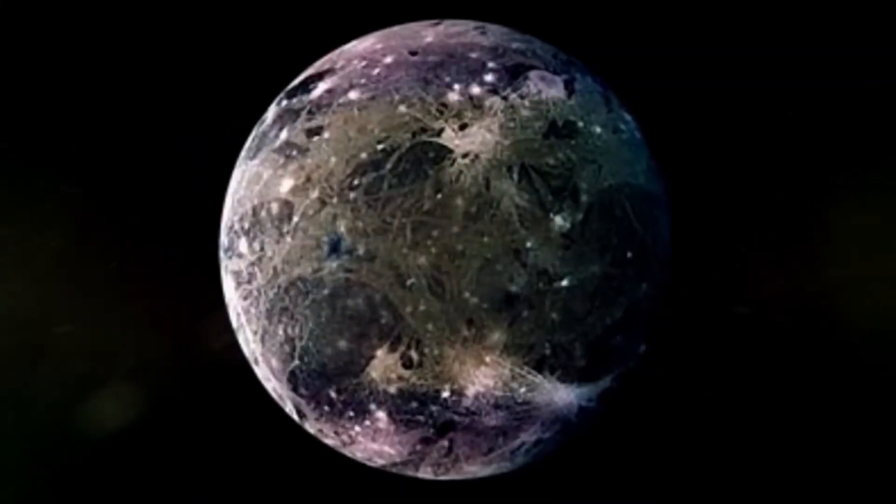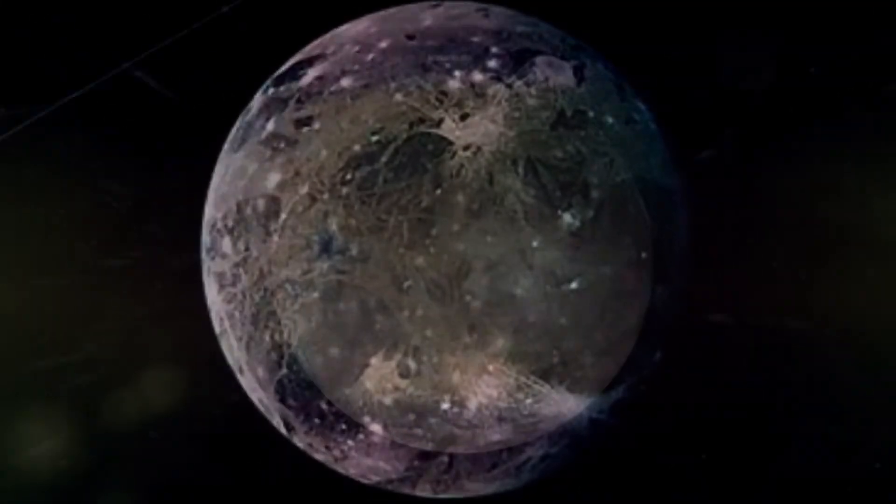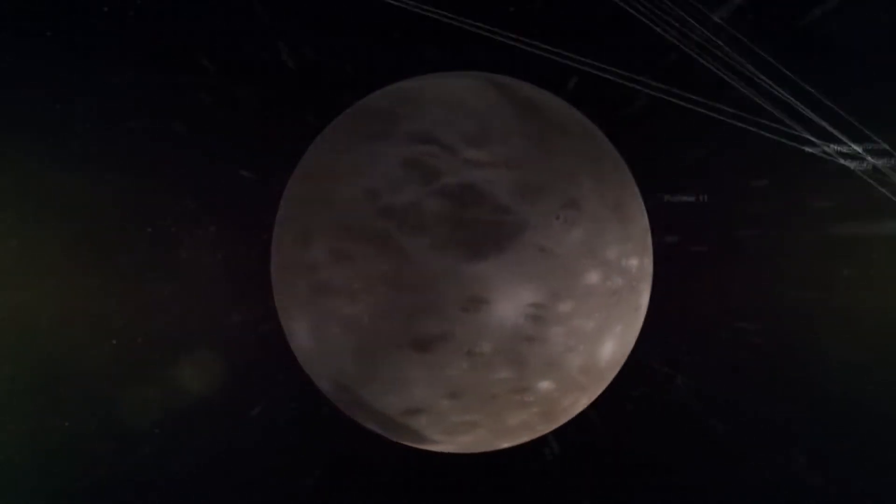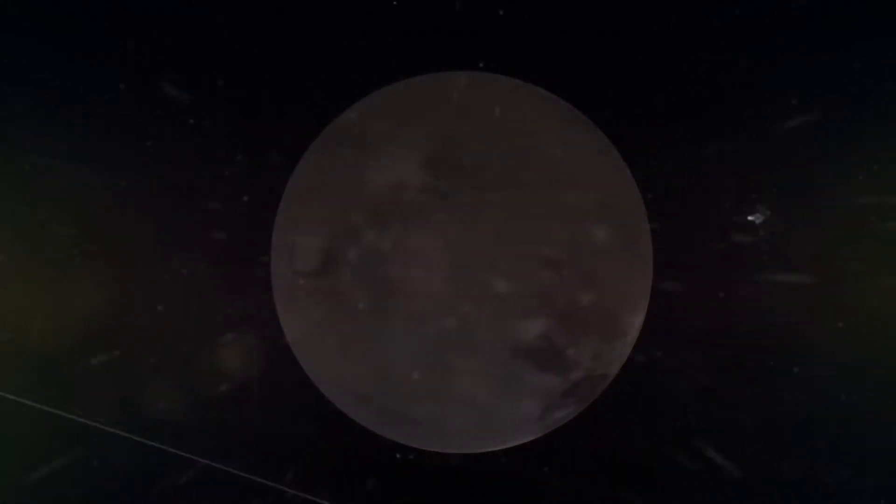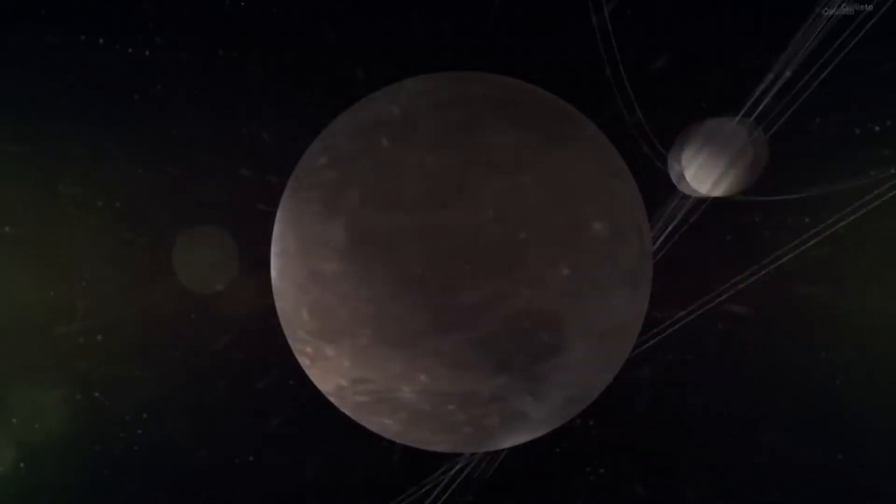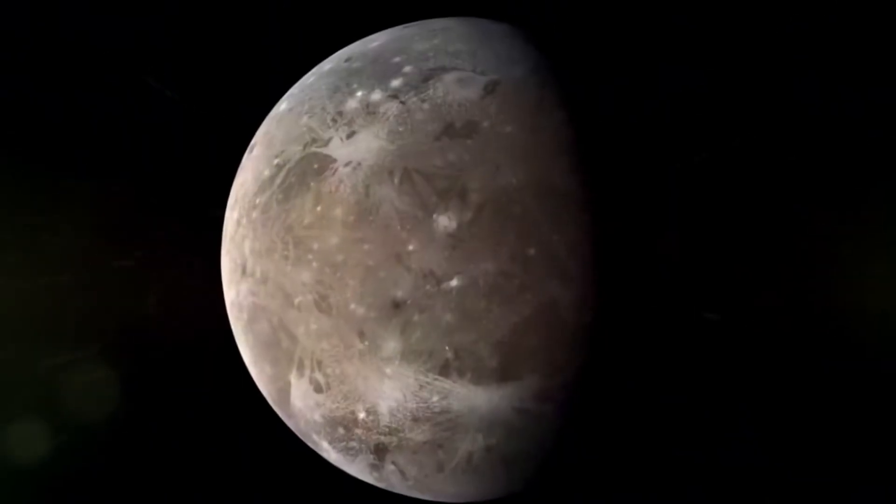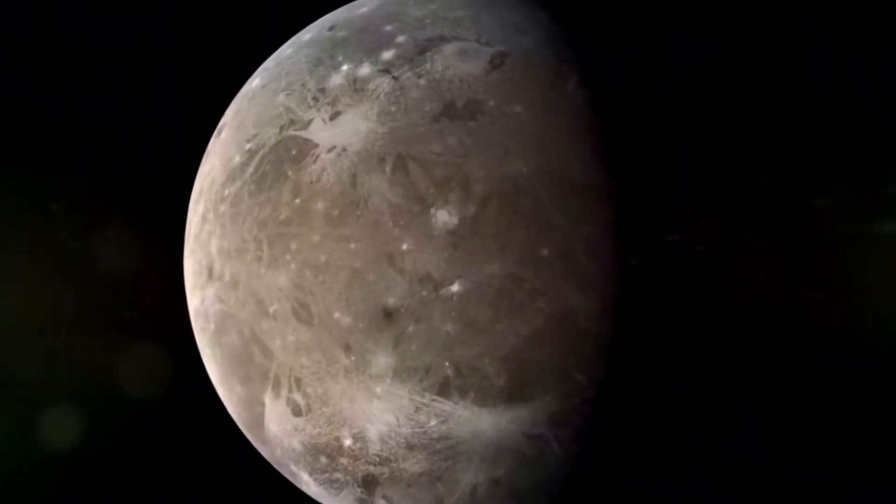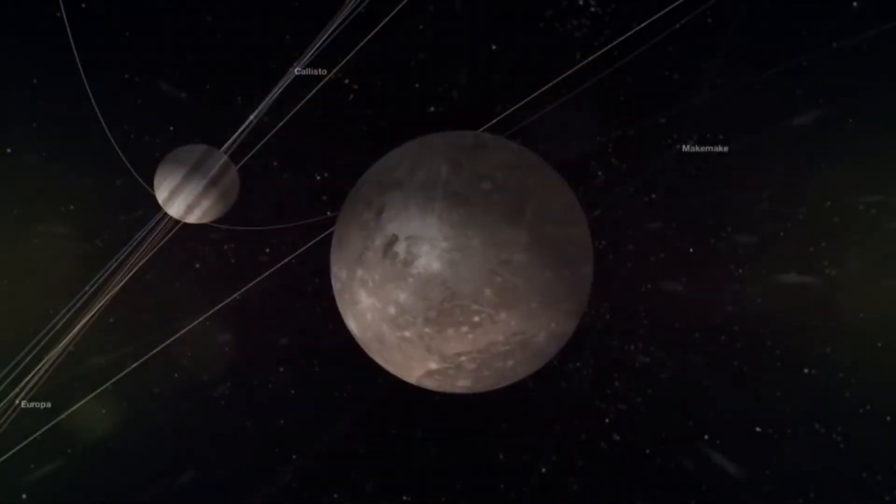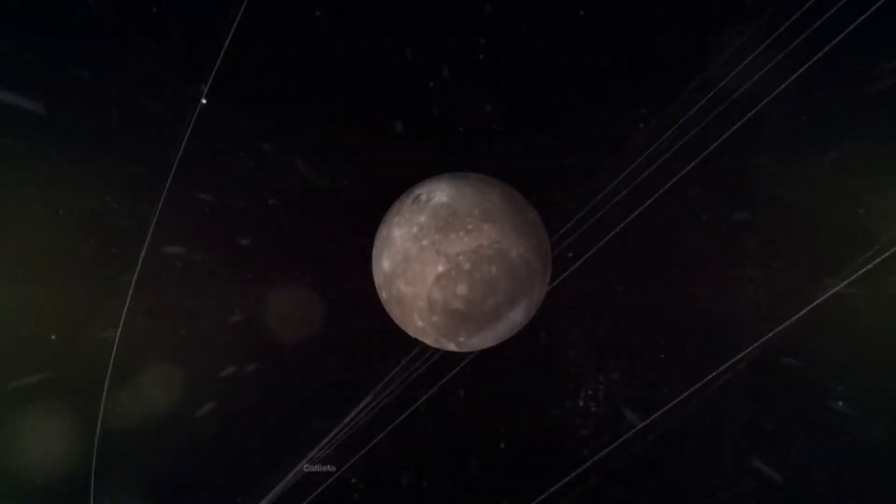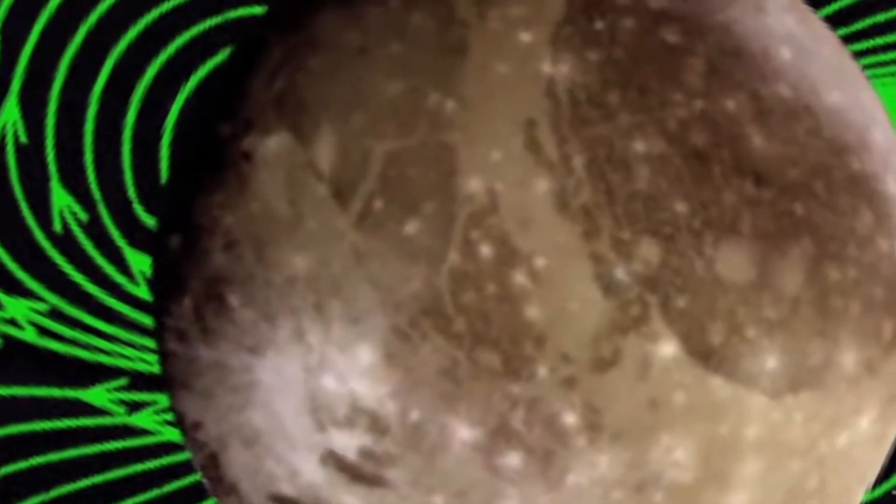Ganymede is the only satellite in the solar system that has a magnetosphere. It is the second strongest after Mercury's. But the most amazing thing is that we can listen to it even now—I'm not kidding.